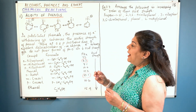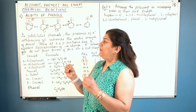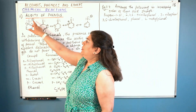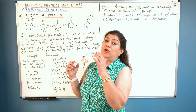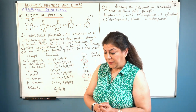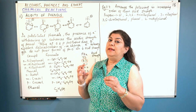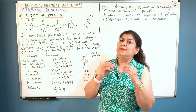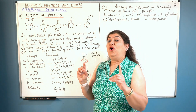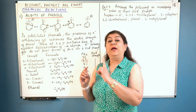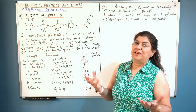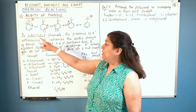Now, when you have substituted phenols — when some other group is added to phenol — we have to ask: does it help the acidic character or not? The formation of the phenoxide ion leads to stability. So any substituent which helps in the formation of the phenoxide ion, or which makes the phenoxide ion more stable, will help the acidic character of phenol.